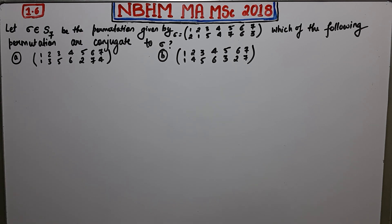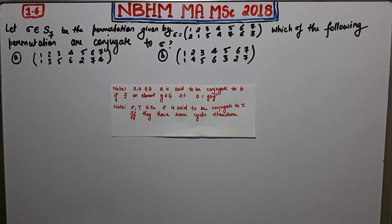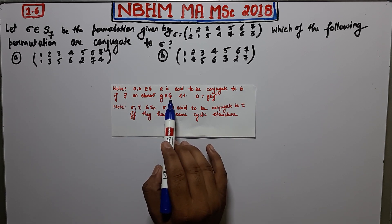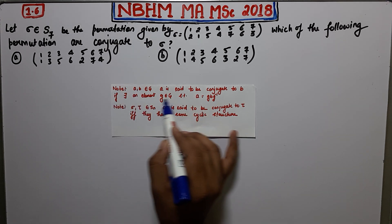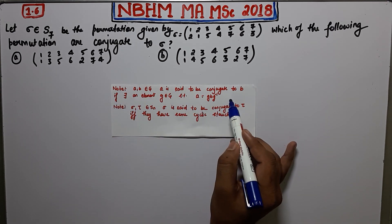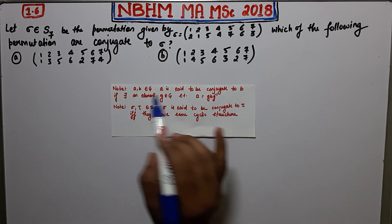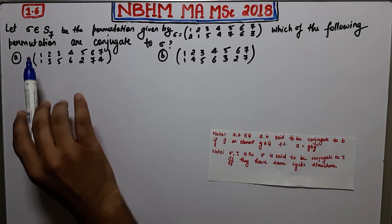Before proceeding, let us recall the definition of conjugacy. Note 1: for two elements a, b belonging to a group G, a is said to be conjugate to b if there exists an element g in G such that a = g·b·g⁻¹. This is the standard definition of conjugacy.